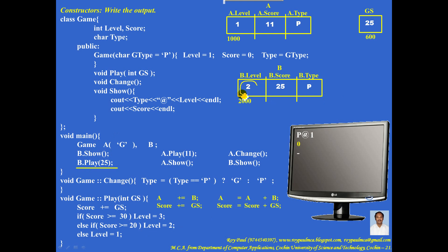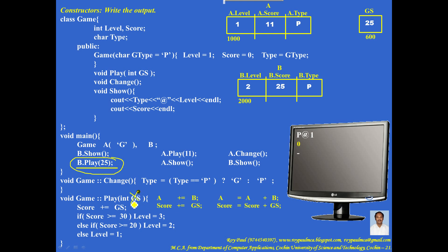B.level became 2. After executing the function, control goes back to where it was called. The parameter GS no longer exists, so it is deallocated.